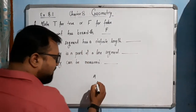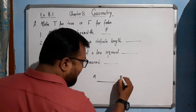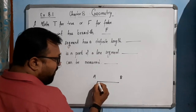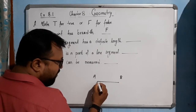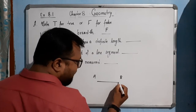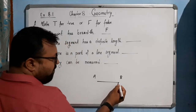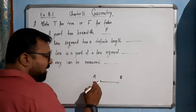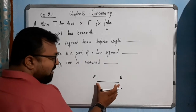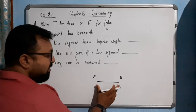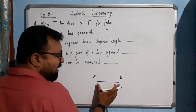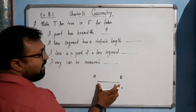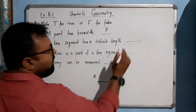Now, 'a line segment has a definite length.' Suppose a line segment — let me draw like this — A, B. Since it has two end points, it starts from A and ends at point B. It can be measured, so we can measure the distance between these two points. A line segment has definite length means we can measure it, so it is true.